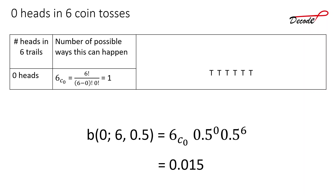For 0 heads in 6 coin tosses: there is only one way — getting tails all 6 times. The binomial probability is Binomial(0; 6, 0.5) = 6_C_0 × 0.5^0 × 0.5^6 = 1 × 1 × 0.5^6, which turns out to be 0.015.